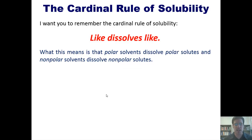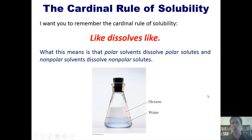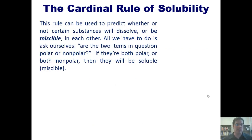Well, what that means is that polar solvents dissolve polar solutes and non-polar solvents dissolve non-polar solutes. For instance, if I take hexane, which is very non-polar and dissolve it in water, you'll note that those two liquids are not miscible or soluble in each other. They separate out into two distinct layers. This cardinal rule of solubility then, that like dissolves like, can be used to predict whether or not certain substances will dissolve or be miscible in each other. All we have to do is ask ourselves: are the two items in question polar or non-polar? If they're both polar, or if they're both non-polar, then they will be soluble or miscible.